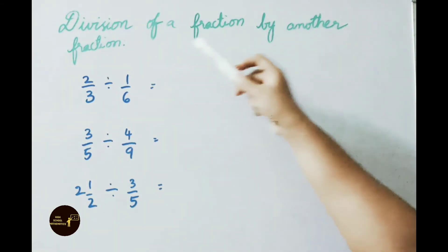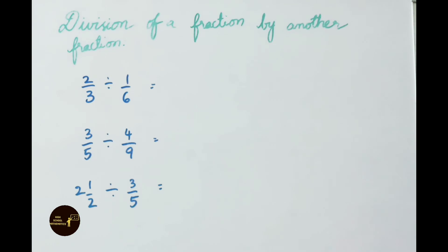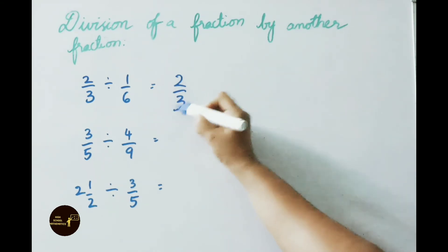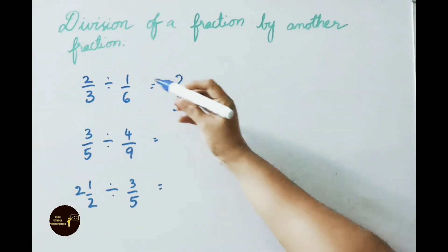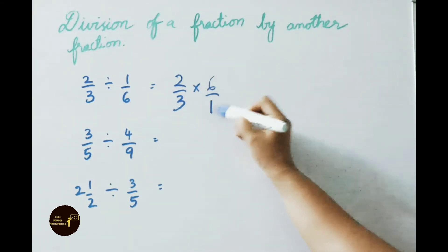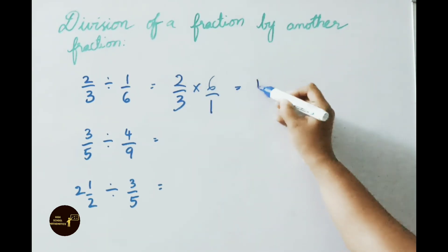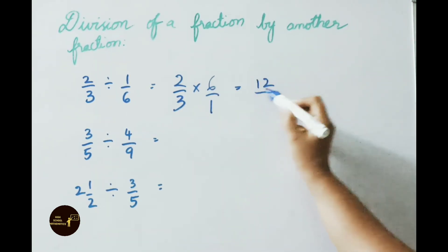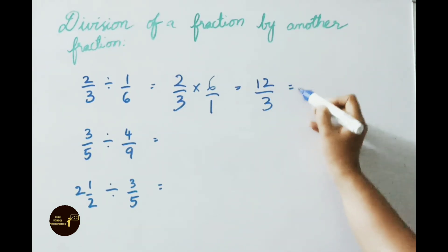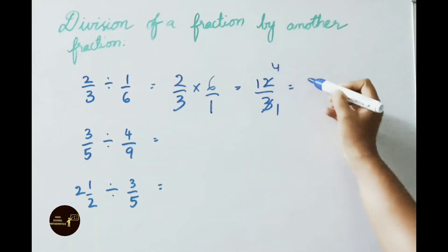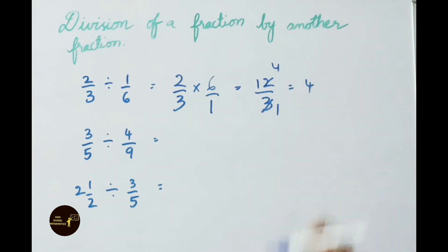See next: division of a fraction by another fraction. See the first example: 2/3 divided by 1/6. Write down 2/3 × reciprocal of 1/6, which is 6/1. Multiply the numerators: 2 × 6 = 12, denominators: 3 × 1 = 3. 3 goes into 12 four times. So the answer is 4.